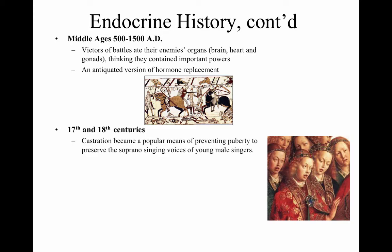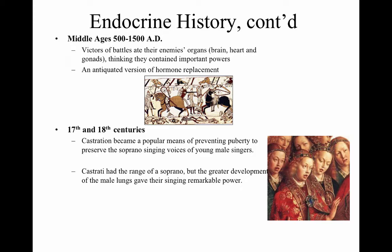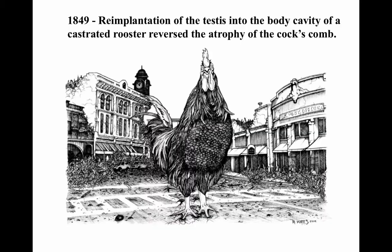In the 17th and 18th centuries, castration became a popular means of preventing puberty to preserve soprano singing voices of young male singers. The castrati had the range of a soprano but the greater lung development of a male gave their singing remarkable power. Amazingly, the last official castrato, Alessandro Moreschi, retired from the Sistine Chapel in 1913. In 1849, experiments re-implanting testes into the body cavity of castrated roosters reversed atrophy of the coxcomb.